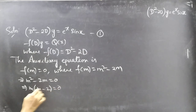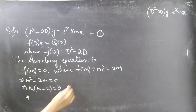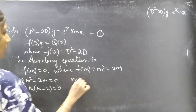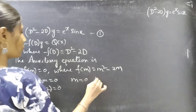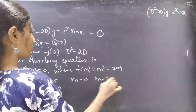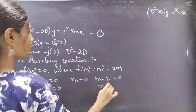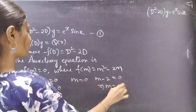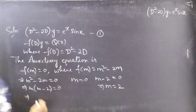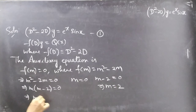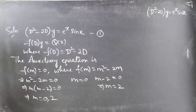Taking m common from the two terms gives m(m - 2) = 0. Setting each factor to zero: m = 0 and m - 2 = 0, giving m = 2. So the roots are m = 0 and m = 2, which are real and distinct.